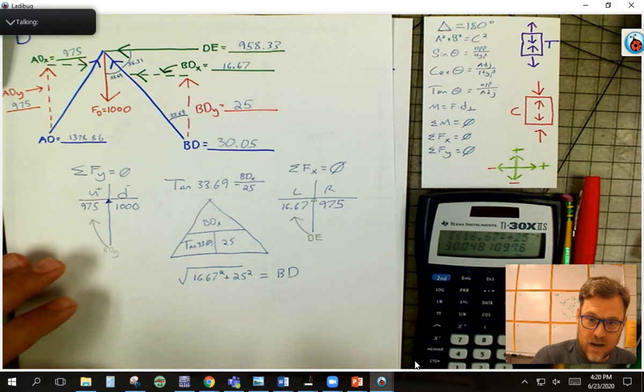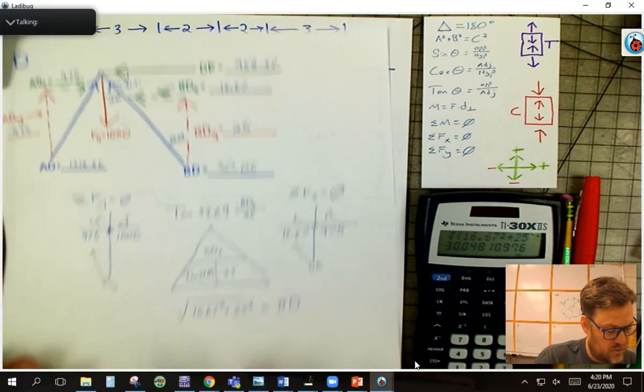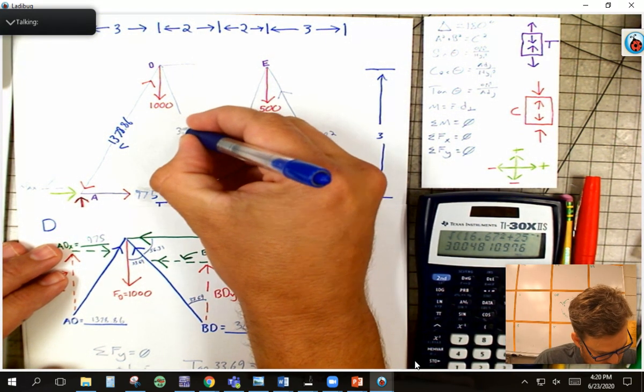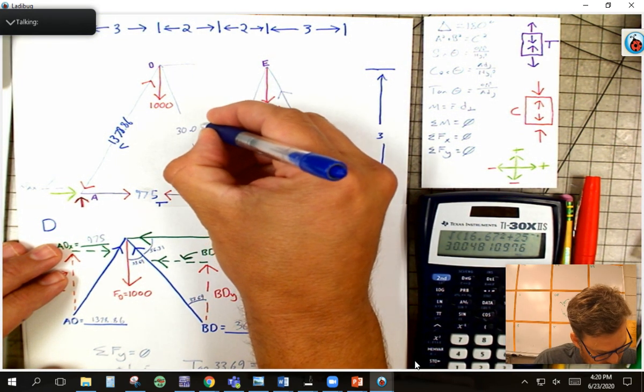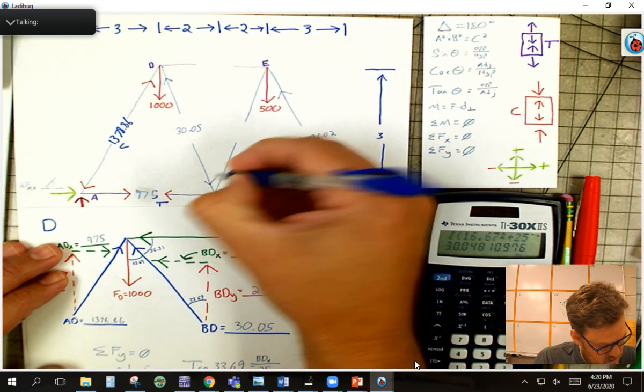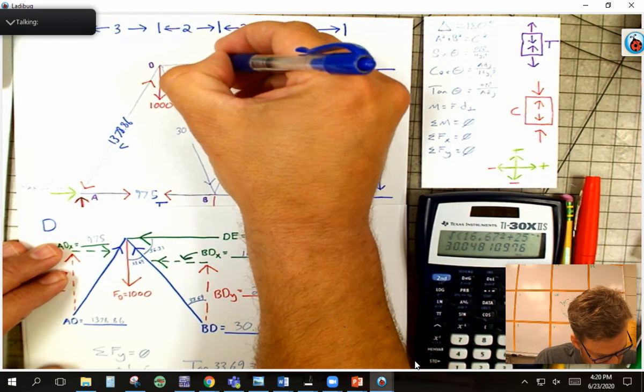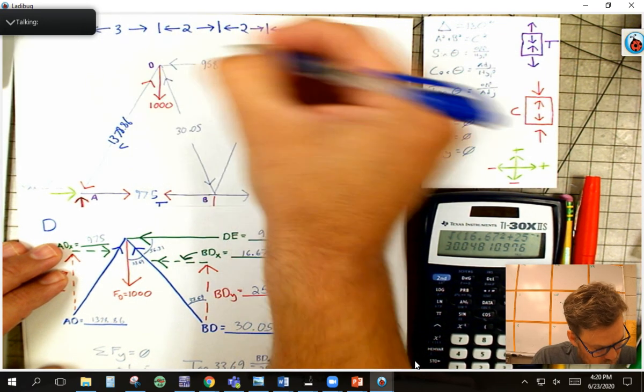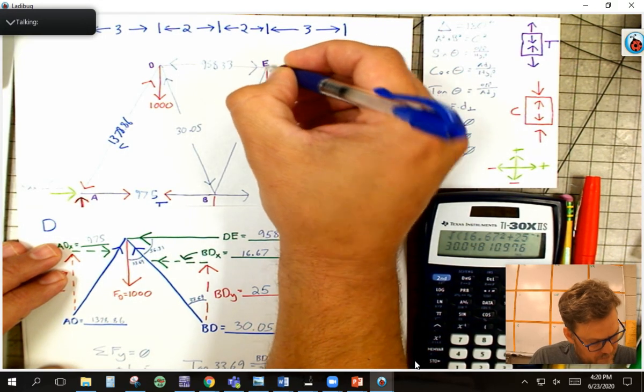Now, the last thing I would want to do here is come back to my overall chart. I could fill in this number, 30.05. I knew that this one was going up in there. That means this one's going down, and I have this number here, 958.33. That one's going that way, which means that one's going that way.